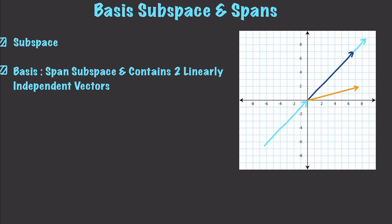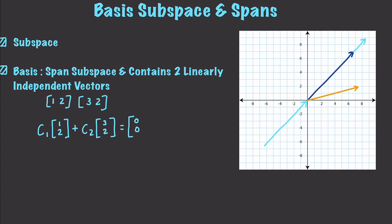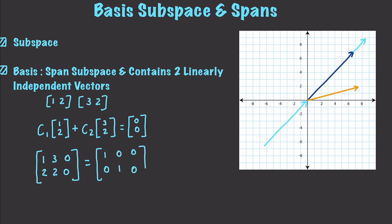It would be very easy to verify a basis. Let's say we have [1,2] and [3,2]. We set up the equation: c1·[1,2] + c2·[3,2] = [0,0], and then solve the system of equations. If you solve this system, you're going to get a result that tells you these two vectors are linearly independent from each other.